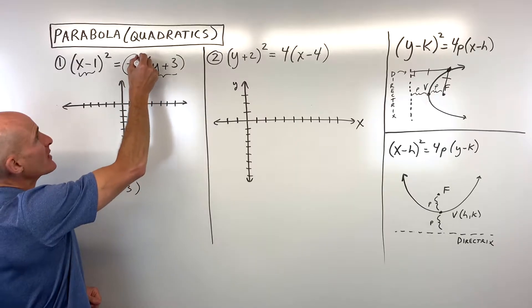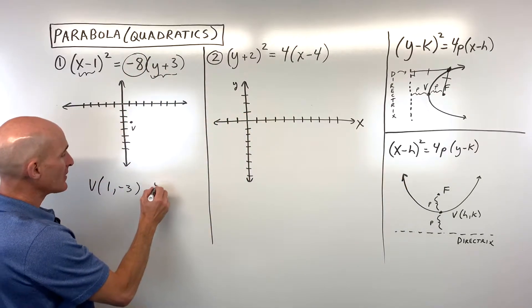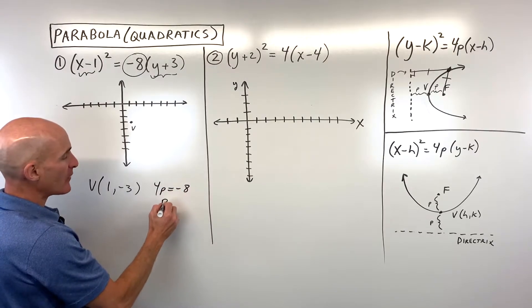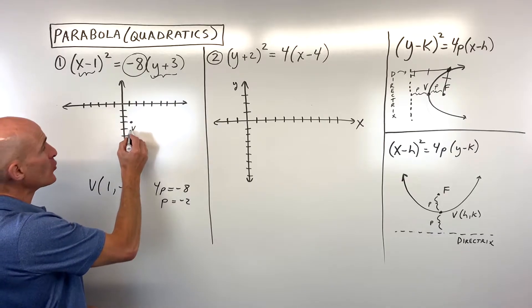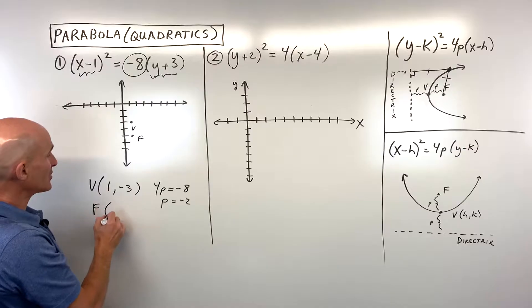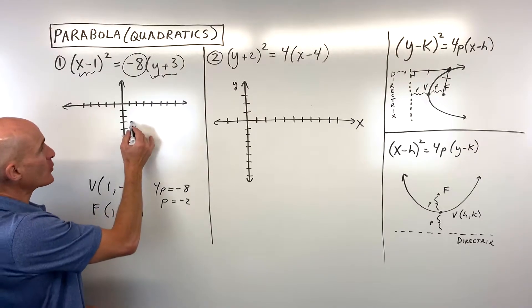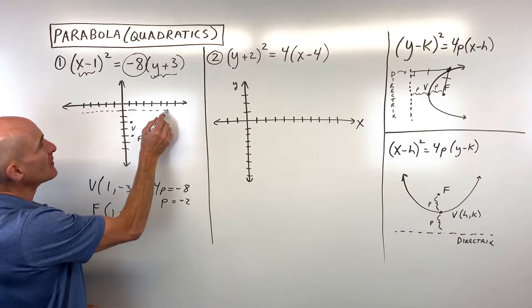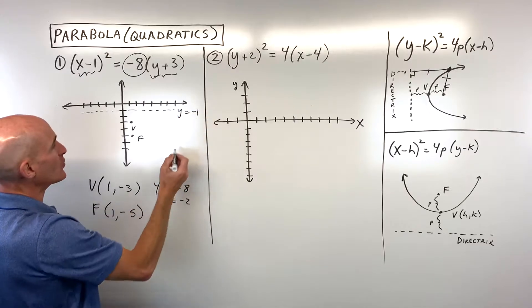This quantity negative 8 is our 4p. So 4p equals negative 8, which means p equals negative 2. That tells us if I go down 2, that's our focus at (1, -5). And if I go up 2 from the vertex, that gives us the directrix, which is the line y equals negative 1.